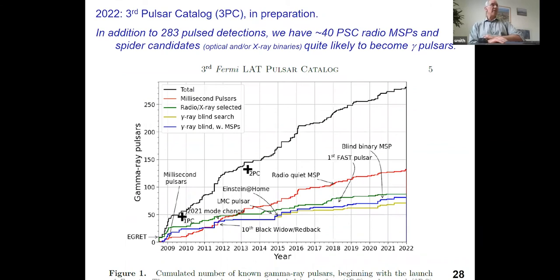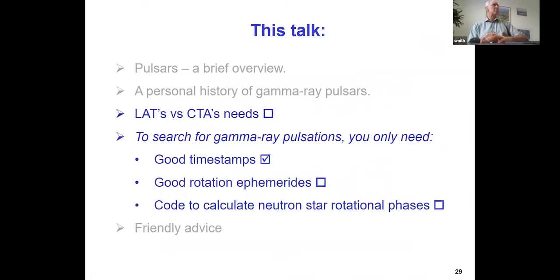So we're marching on. The rate of new pulsars seen in Fermi LAT is quickly approaching 300. We've detected 283. We have another 40 or so that we're pretty darn sure will become gamma ray pulsars in the next year or two. Ask me about it later if you care. Yeah, the curve is starting to roll over a little bit, but we're still marching forward. All right. Let's talk about CTA.